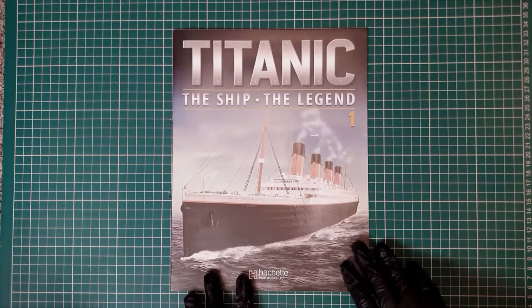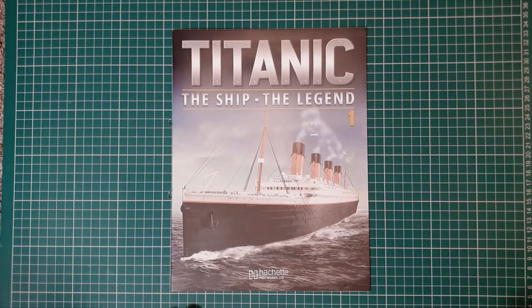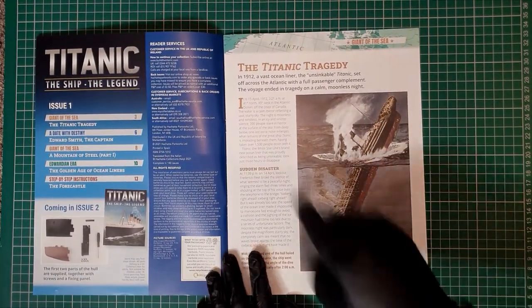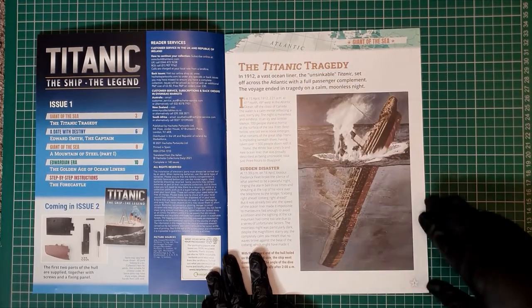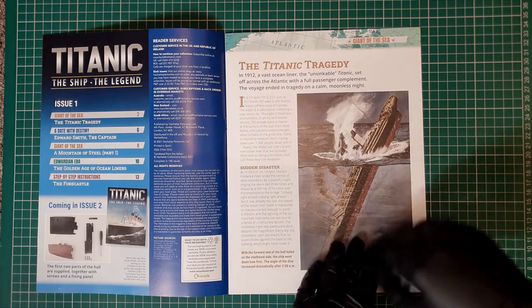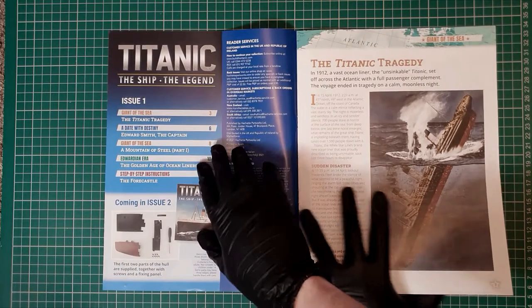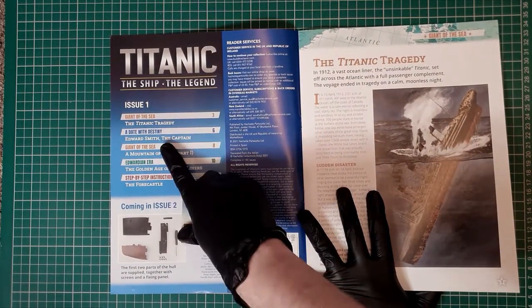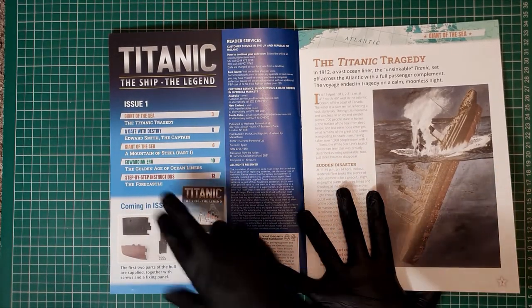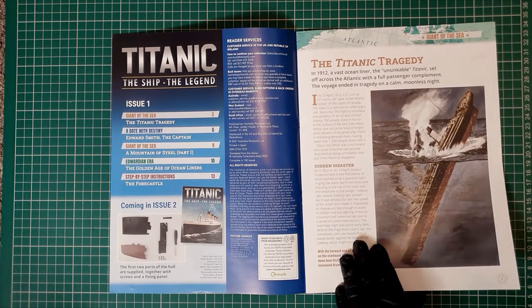On to the actual magazine itself. Titanic, the Ship, the Legend, issue one. You've got the Giants of the Sea here. The tragedy of Titanic in 1912, a vast ocean liner, the unsinkable Titanic, set across the Atlantic with full passenger complement. The voyage ended in tragedy on a calm moonless night. You've got a breakdown of what you get here: issue one, the Giant of the Sea tragedy, the date with destiny, Edward Smith the Captain, the Giant of the Sea Amongst the Steel part one, the Edwardian Era, the Golden Age of Ocean Liners, and step-by-step instructions for the forecastle.